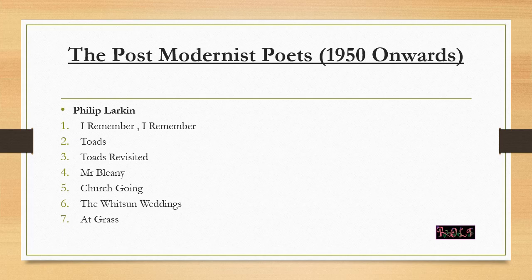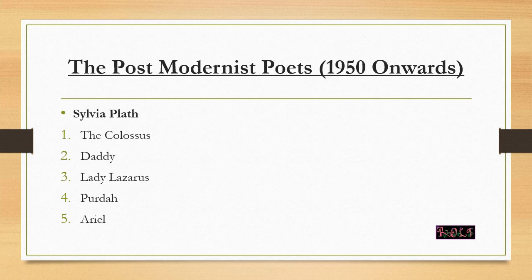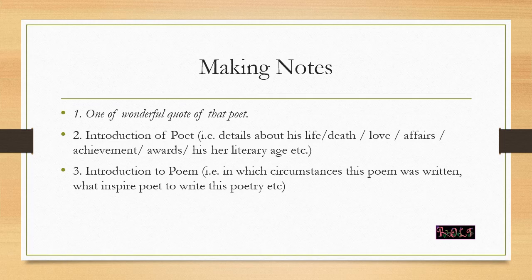After the Modernist poets comes the post-Modernist period from 1950. Two important prescribed poets of this era are Philip Larkin — with seven poems: I Remember, I Remember; Toads; Toads Revisited; Mr. Bleaney; Church Going; The Whitsun Weddings; and An Arundel Tomb — and Sylvia Plath, the master of confessional poetry, with poems including The Colossus, Daddy, Lady Lazarus, Purdah, and Ariel. Of these, Daddy is the most important and is a must-read.